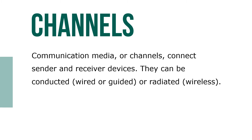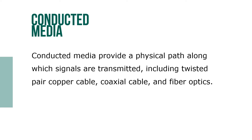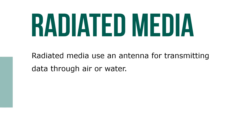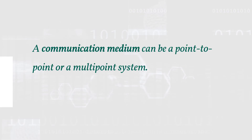Communication media, or channels, connect sender and receiver devices. They can be conducted (wired or guided) or radiated (wireless). Conducted media provide a physical path along which signals are transmitted, including twisted-pair copper cable, coaxial cable, and fiber optics. Radiated media use an antenna for transmitting data through the air or water. A communication medium can be a point-to-point or a multi-point system.